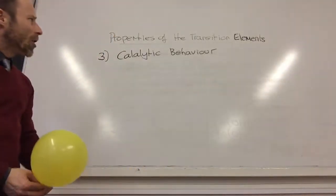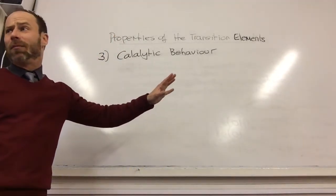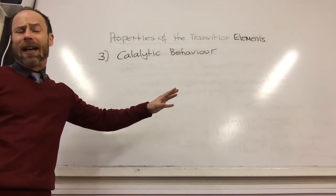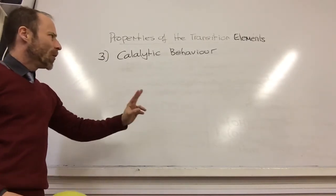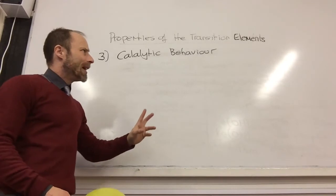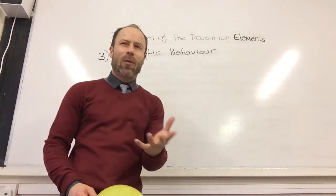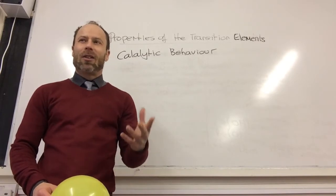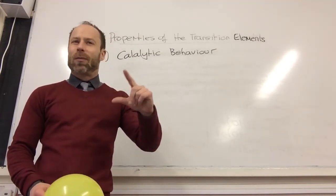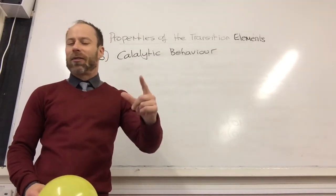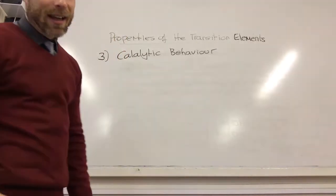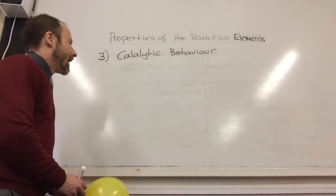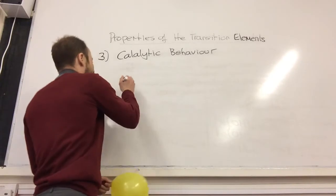Transition metals can act as catalysts, because you've learned them in AS. But why? There's two ways they can act. The first way is because they've got these partially filled d-orbitals, they can form variable oxidation states. So you know we talked about copper plus, copper two plus, iron two plus, iron three plus.